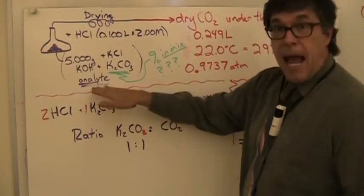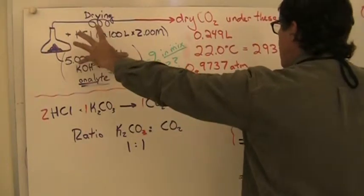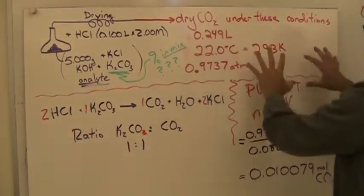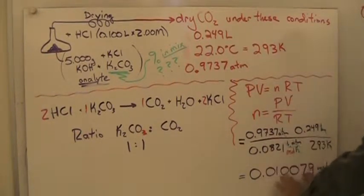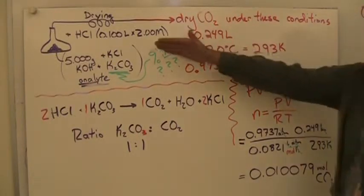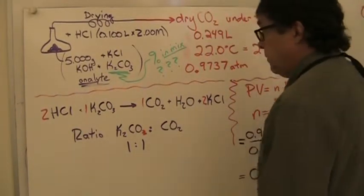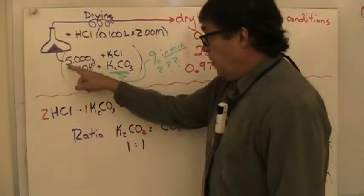When we've reacted it with hydrochloric acid, we're going to collect the gas and get moles of the gas. From moles of gas, we are going to be able to tell something about our original sample. That's what gravimetric analysis is all about.